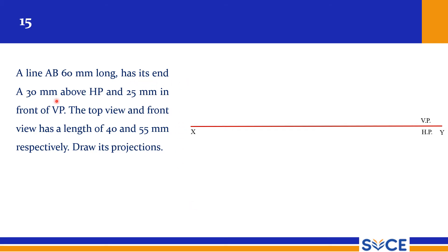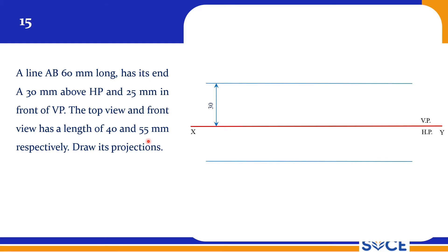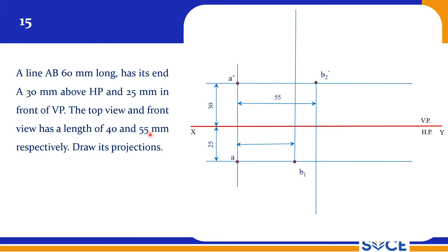A line AB 60mm long has its end A, 30mm above HP and 25mm in front of VP. We can mark A dash and A without any problem, getting the fixed points. The front view is 55mm, giving B2 dash at 55mm. The top view gives B1 at 40mm. The true length of 60mm is known — cut the arc and you will get B2.